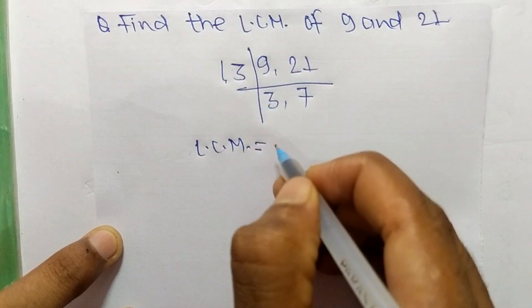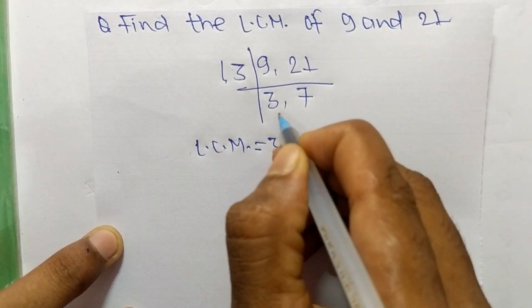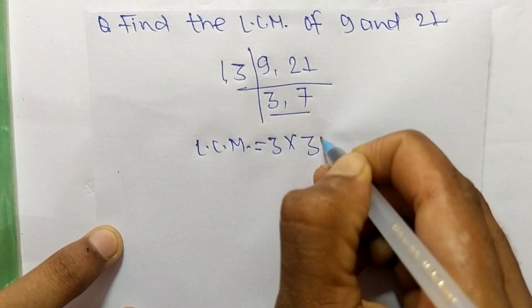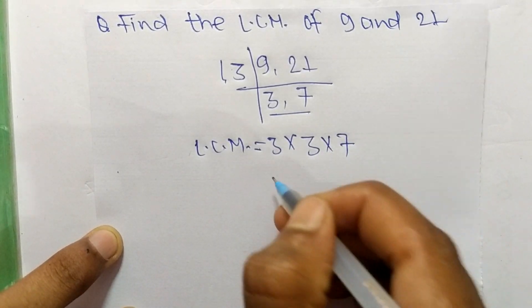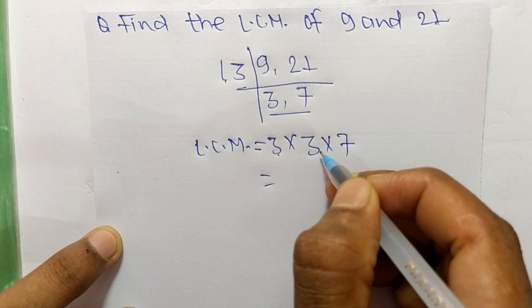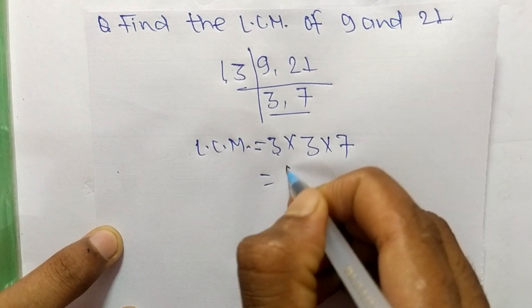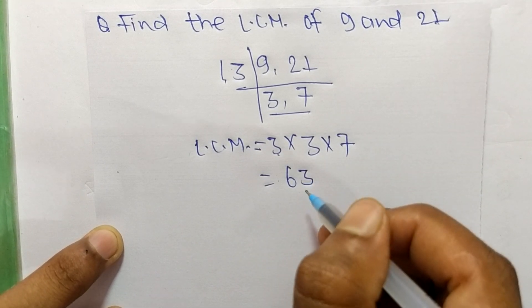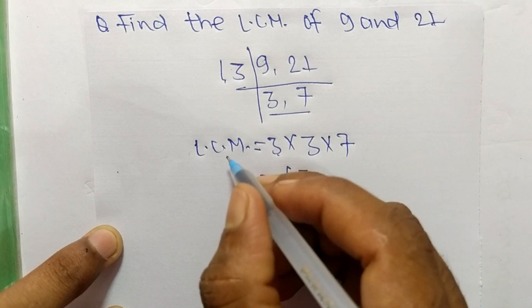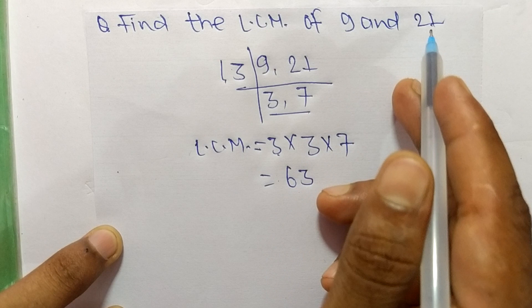So now the LCM is equal to from this part 3, and from this part 3 times 7. So 3 times 3 means 9, and 9 times 7 means 63. So 63 is the LCM of 9 and 21.